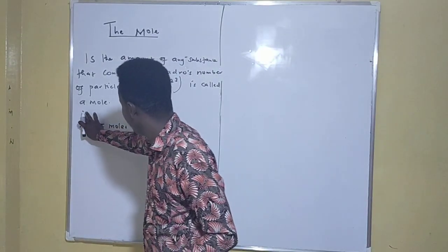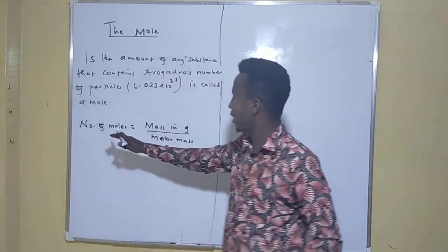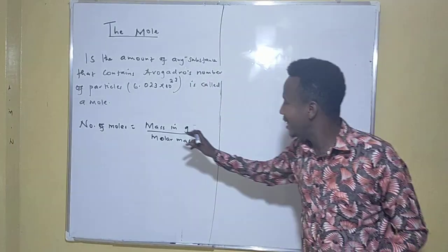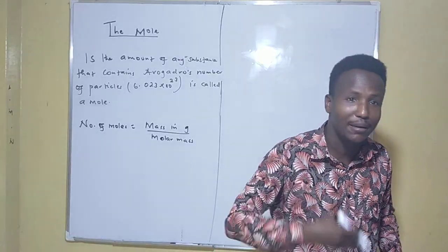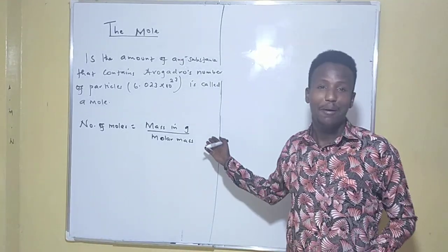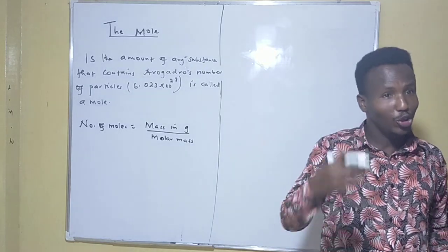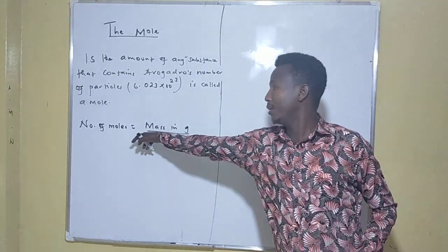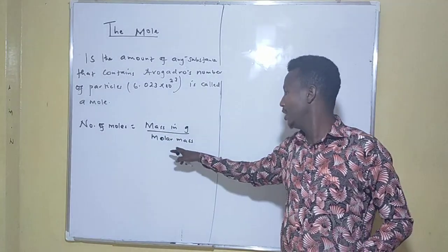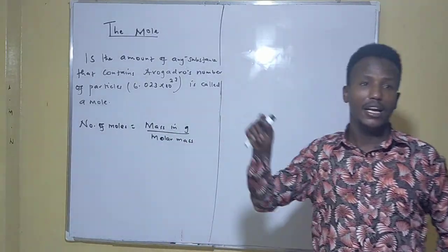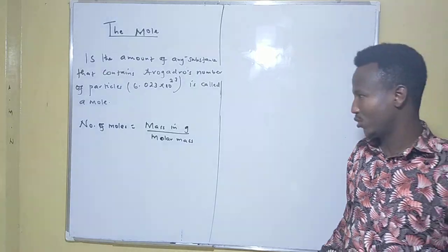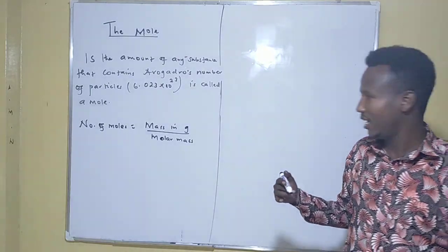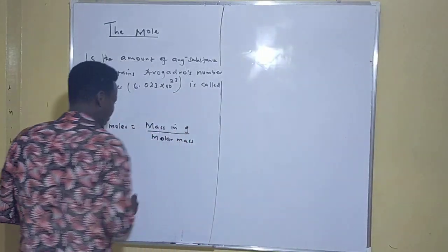From this formula — number of moles equals mass in grams divided by molar mass — in an examination you cannot only be asked for the number of moles. You can also be asked for the mass in grams or the molar mass. I will show you how to derive each formula depending on what is given.